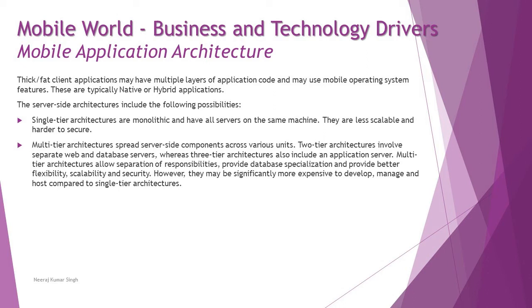Multi-tier architectures spread server-side components across multiple units. Two-tier architecture involves separate web and database servers, whereas three-tier architecture also includes an application server. Multiple-tier architecture allows separation of responsibilities, database specialization, and better flexibility, scalability, and security. However, they may be significantly more expensive to develop, manage, and host compared to single-tier architectures.